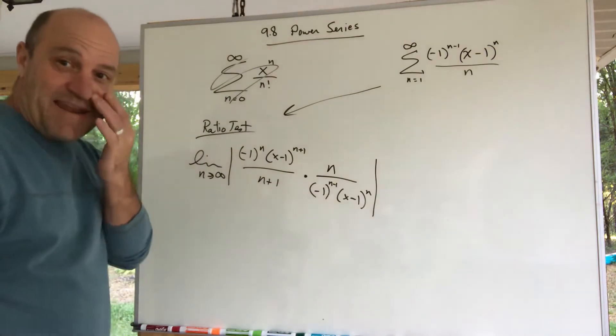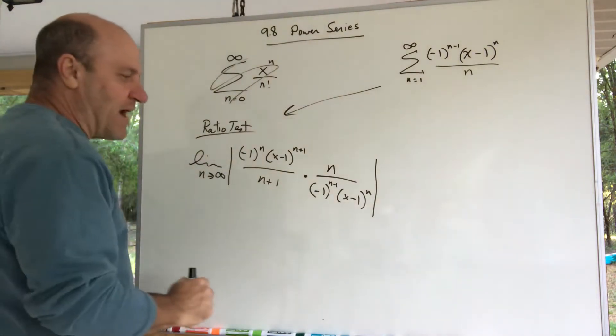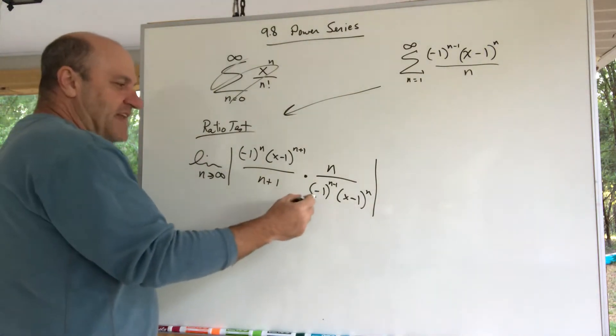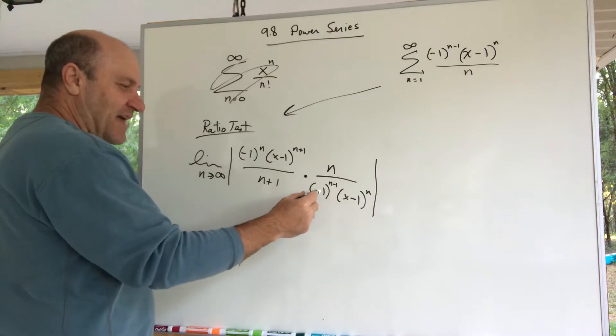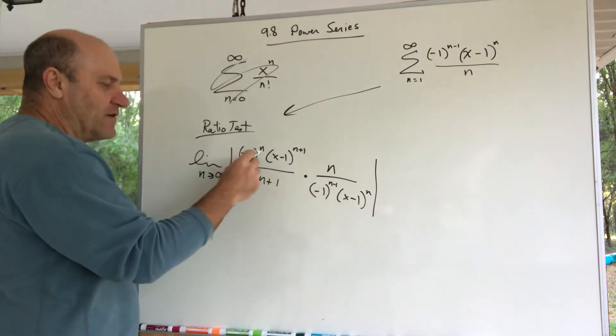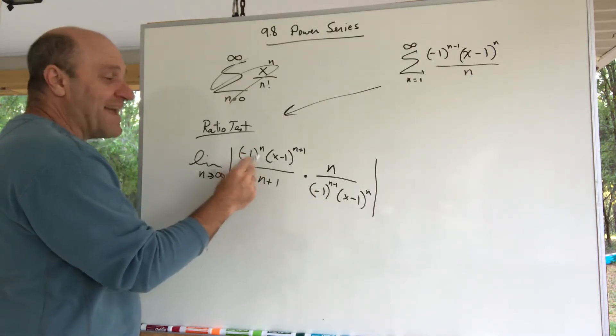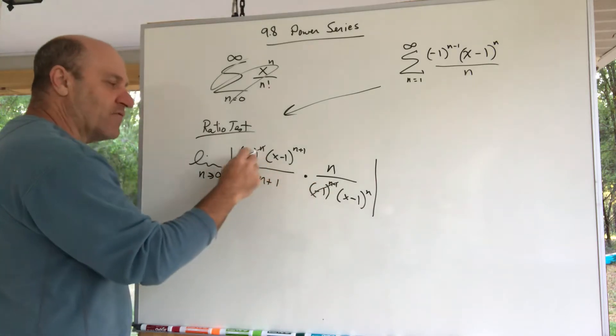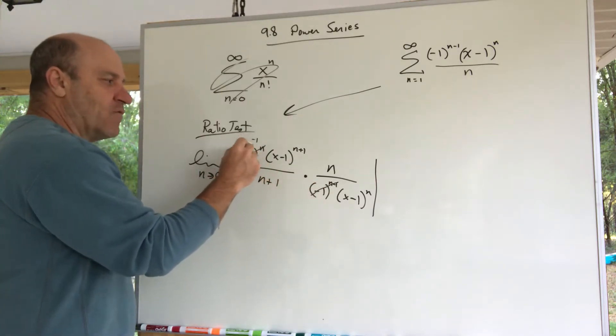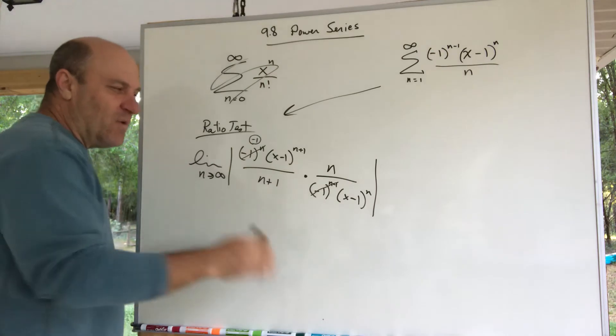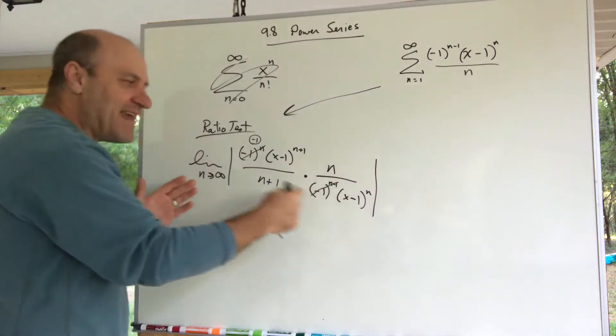And I've got to try to do this limit. It simplifies quite a bit. This negative 1 to a power, negative 1 to a one higher power—I can cancel these negative ones and I'm left with a negative 1 here. You know what? It's in absolute value, so that negative 1 is going to get absorbed by the absolute value. It's going to go away in just a minute.